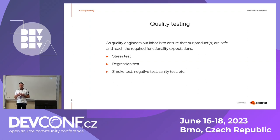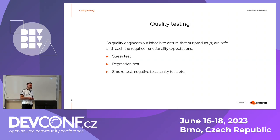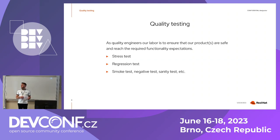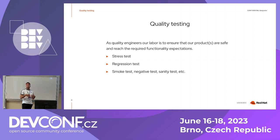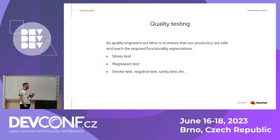Negative testing ensures that a system handles properly, for example, unwanted data input and unexpected user actions. Sanity testing is similar to smoke testing but goes deeper because it covers more than the critical functionalities. Done over a stable build, it is typically related to new or fixed functionality and can also be understood as a subset of regression testing.